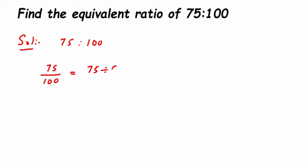This is equal to 75 divided by 5, upon 100 divided by 5. When you divide 75 by 5 you get 15, and 100 divided by 5 is 20. So 15 upon 20 is one equivalent ratio of 75 upon 100. That's the division method done.